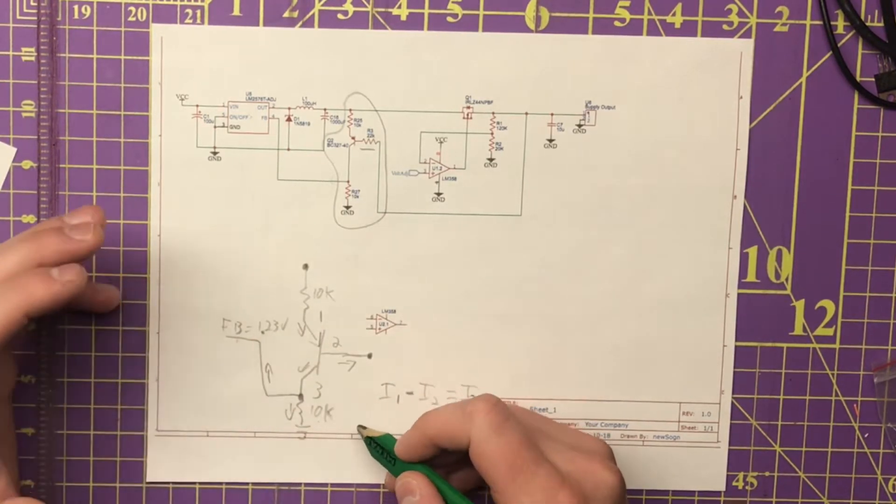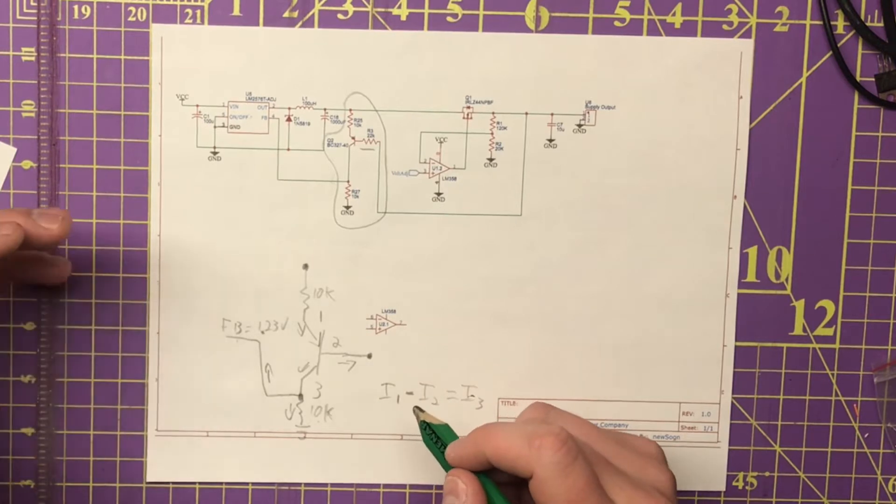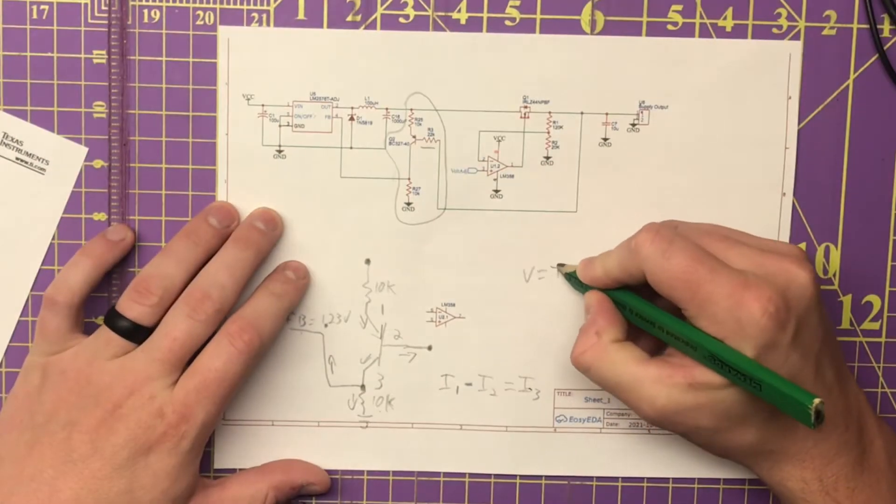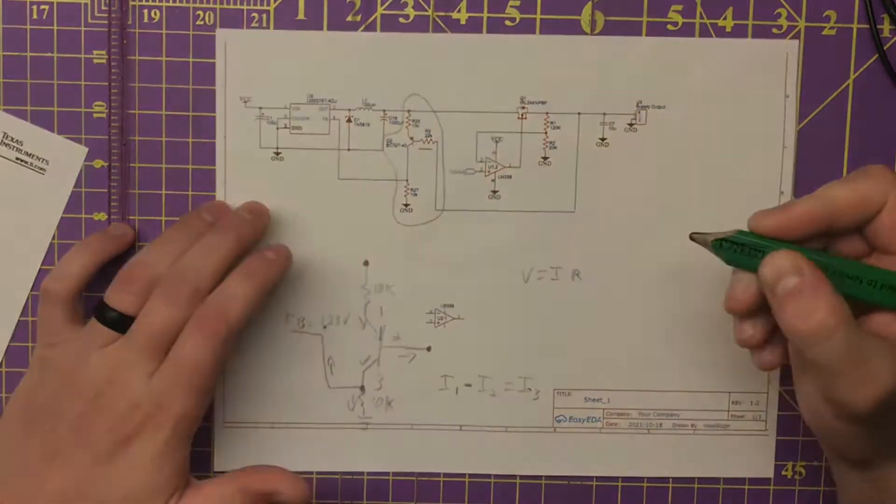Which is 1.23 microamps or something like that, I think. V equals IR. This is how I always remember.